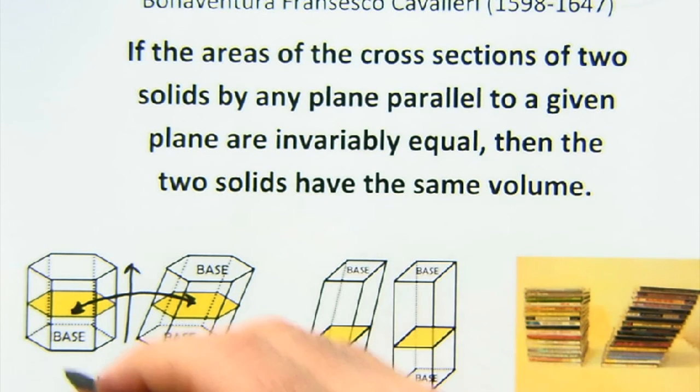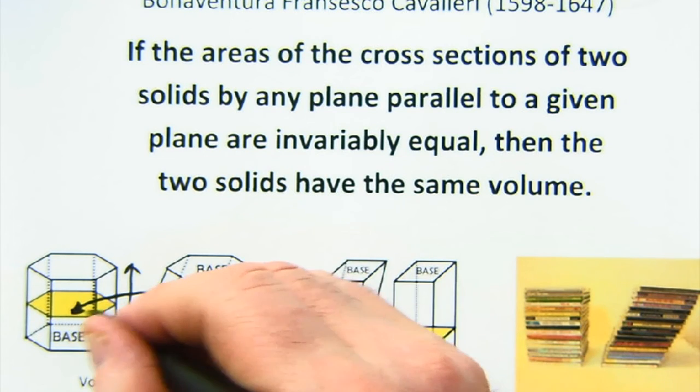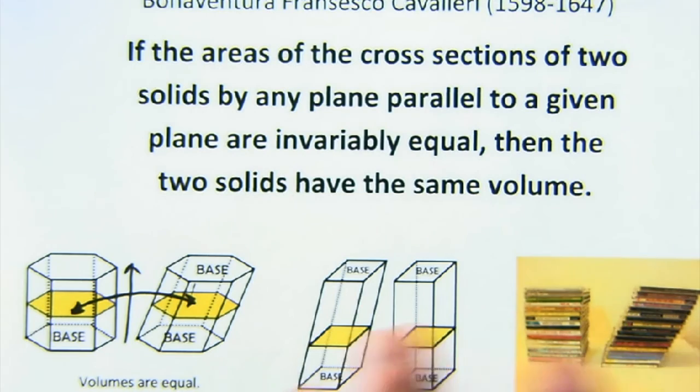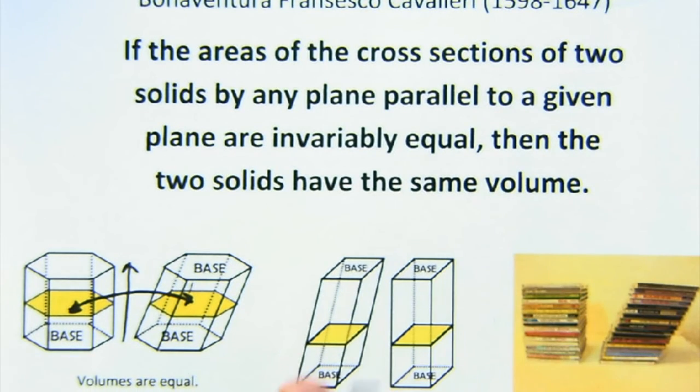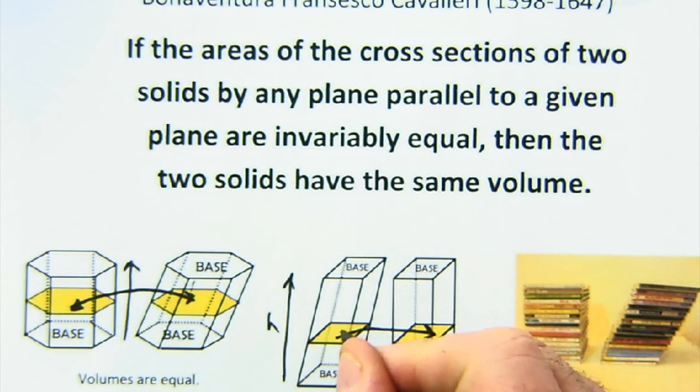So even though one might be a right prism and the other is an oblique one, if those cross-sectional slices all are equal, then the volumes will be equal. In this case the heights are the same here, the cross-sectional values are equal, and so these have the same volume.